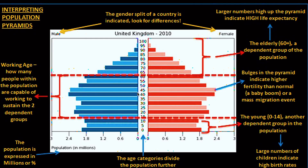Looking at the UK 2010 diagram, from zero to ten and ten to twenty you see deeper bars — a deeper blue color for males and a deeper red color for females. Then something changes: the bars grow larger, forming bulges where they protrude outward at certain age points, meaning something notable is happening at those ages.